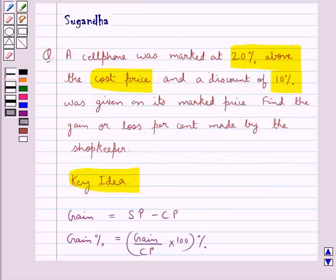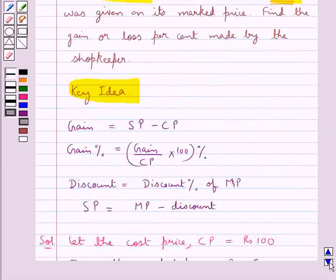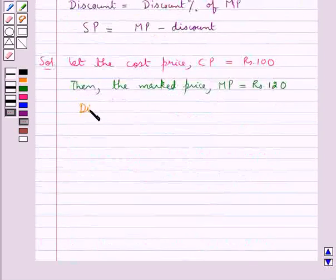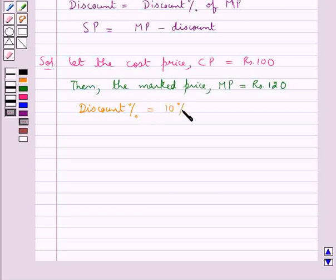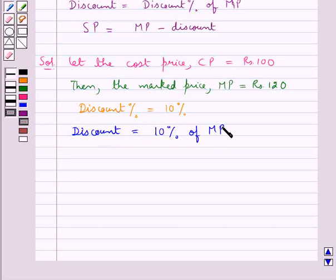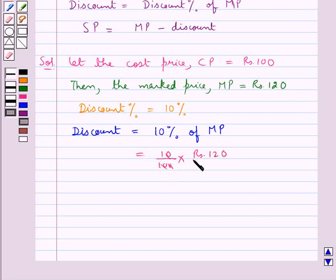Now we are given the discount percent as 10%. So discount is equal to 10% of the marked price MP, which is 10/100 into Rs.120, and this is equal to Rs.12 — the discount given on the cell phone.